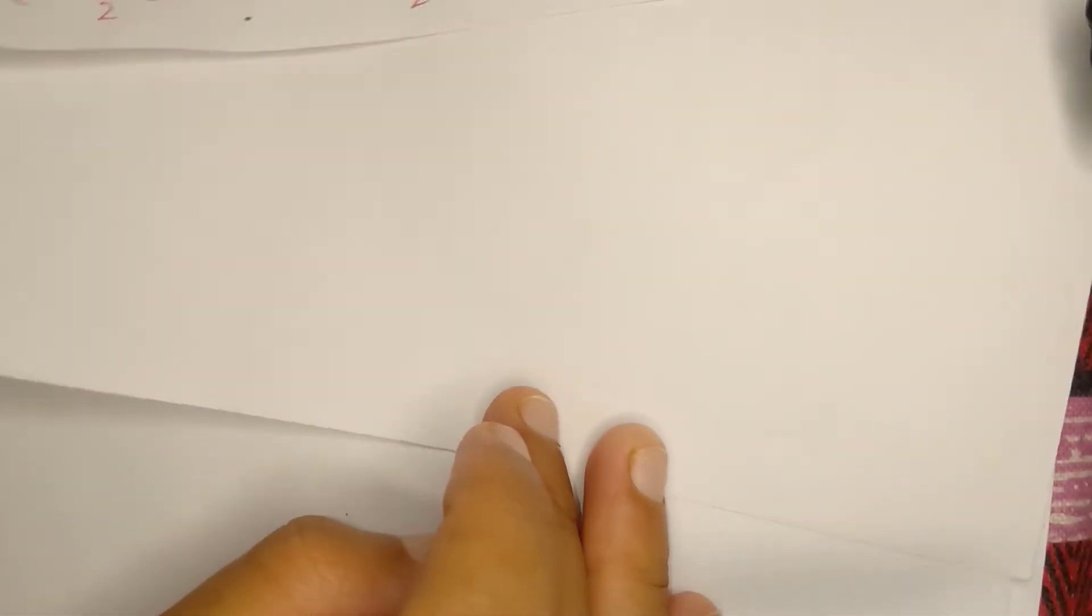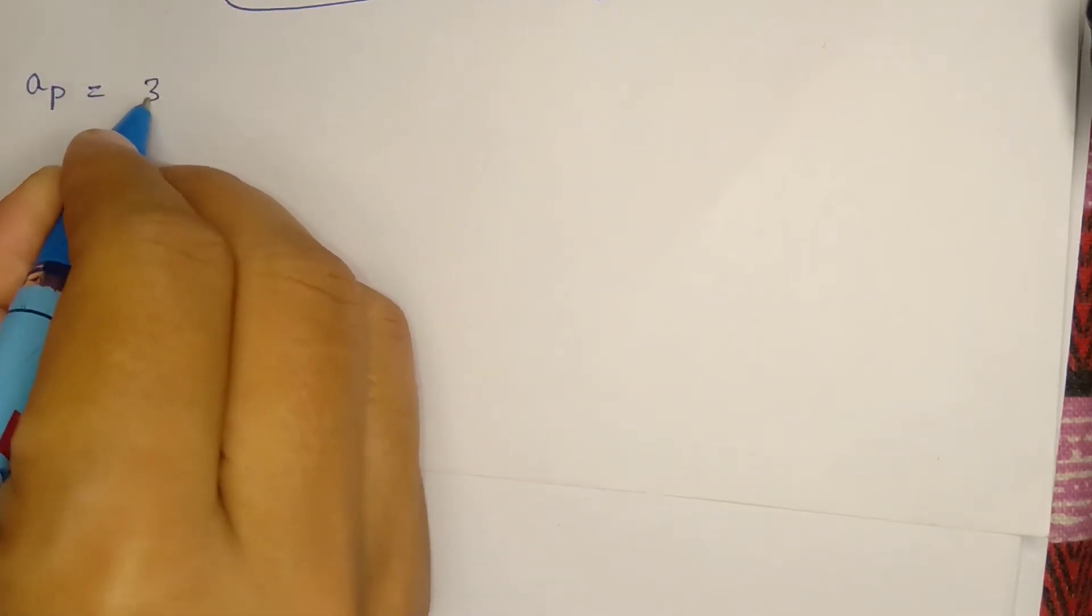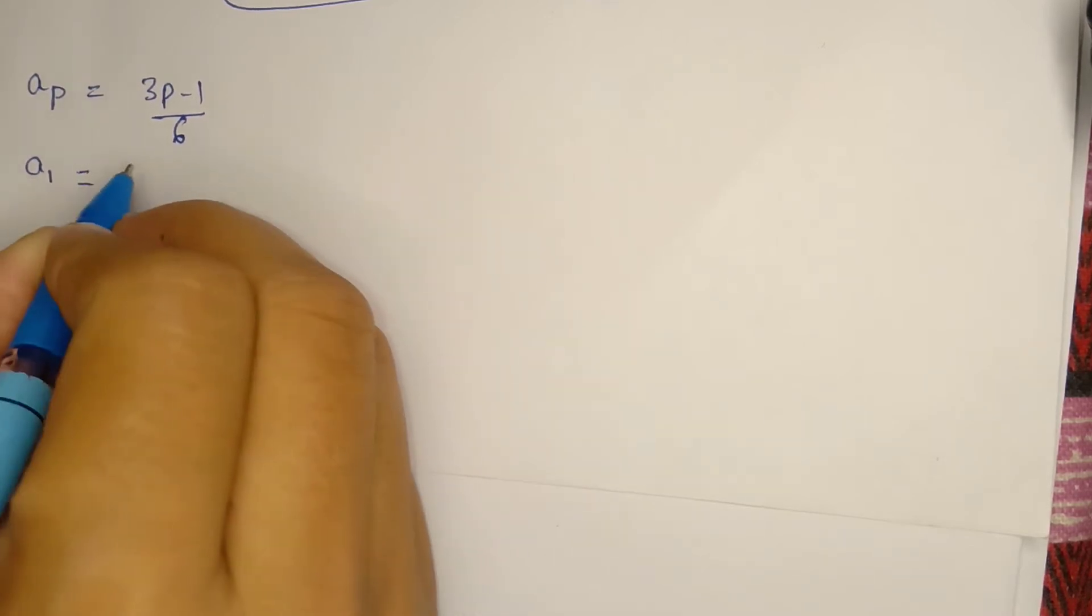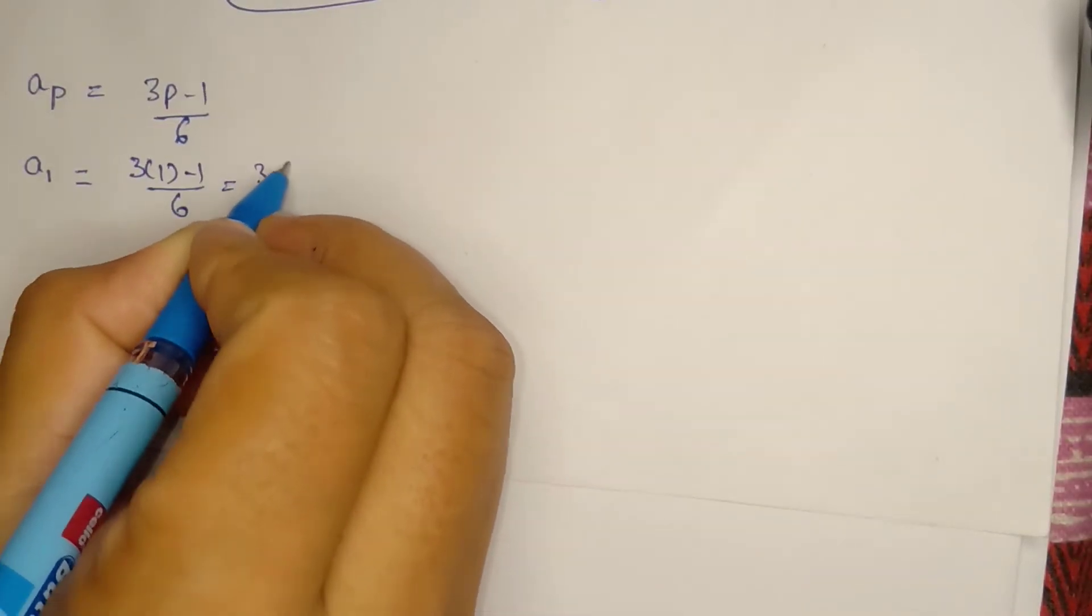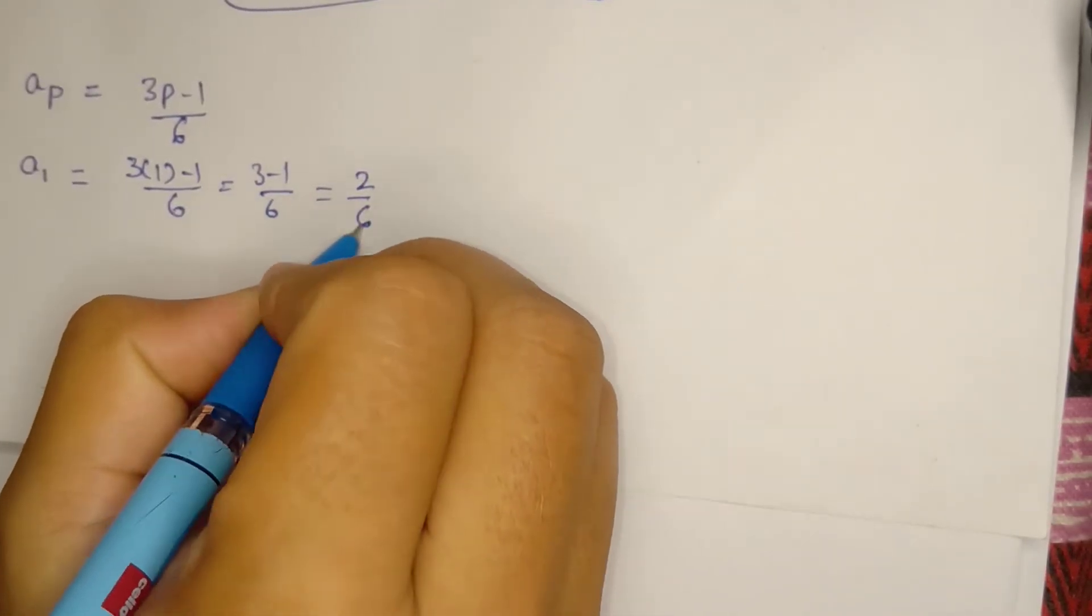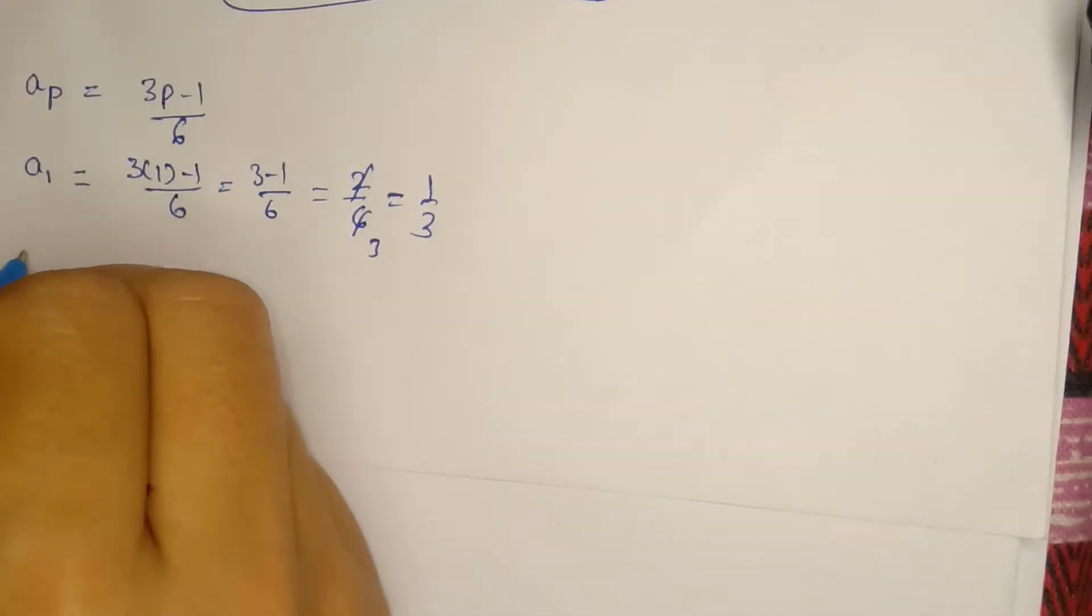Okay, now what has been given to us? We have the pth term given in the AP. For question 14, it is (3p - 1)/6. We can find a1: 3 into 1 minus 1 by 6, that is (3 - 1)/6 = 2/6 = 1/3.